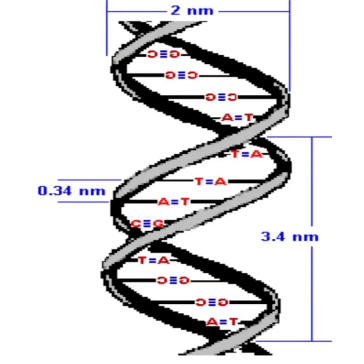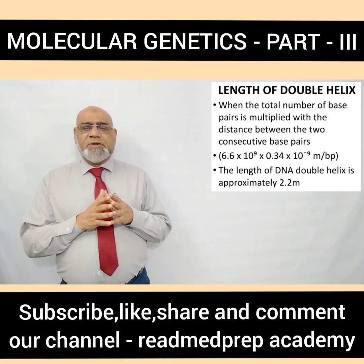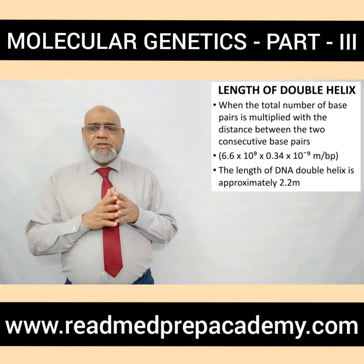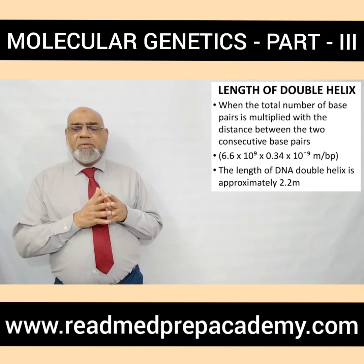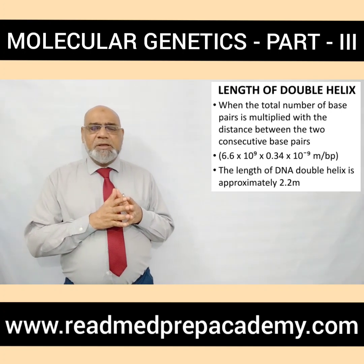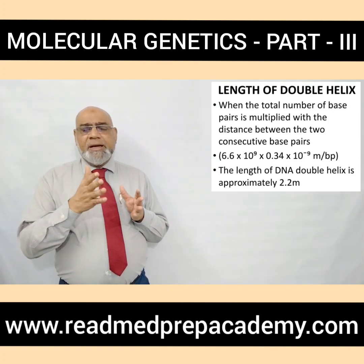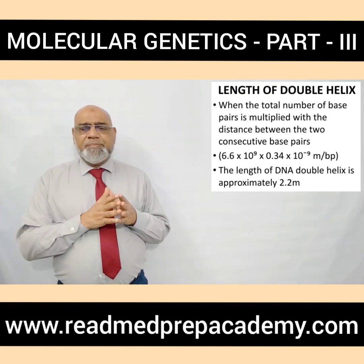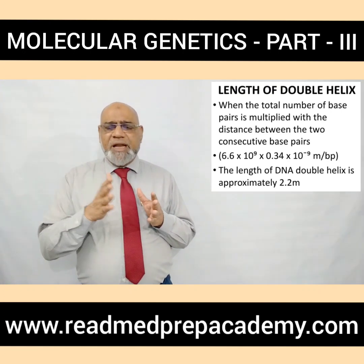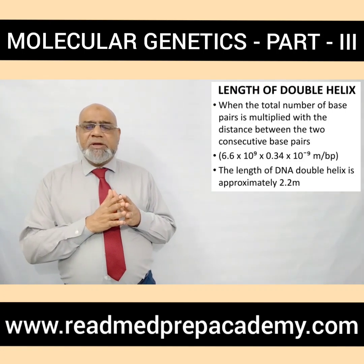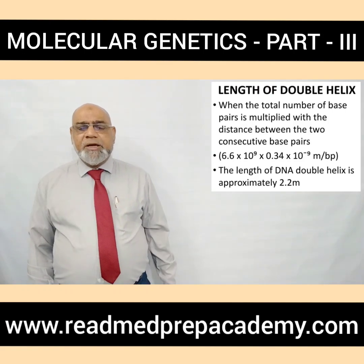The distance between base pairs is 0.34 nanometers. The distance of one spiral is 3.4 nanometers. The thickness of the DNA molecule is 2 nanometers. When the total number of base pairs is multiplied by the distance between two consecutive base pairs, the length of the DNA molecule can be calculated. For example, with 6.6 × 10⁹ base pairs each separated by 0.34 × 10⁻⁹ meters, the length of DNA in a mammalian cell is approximately 2.2 meters.